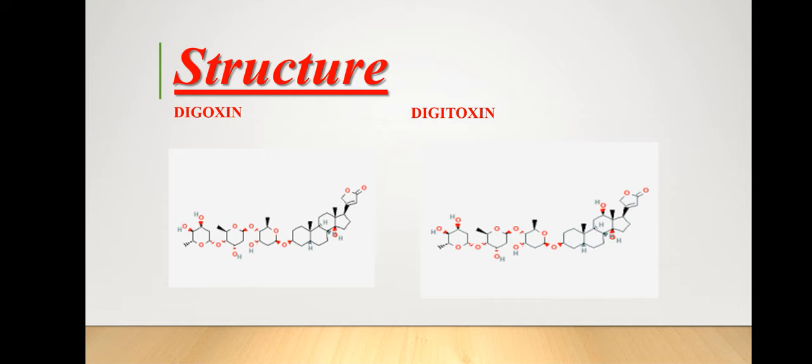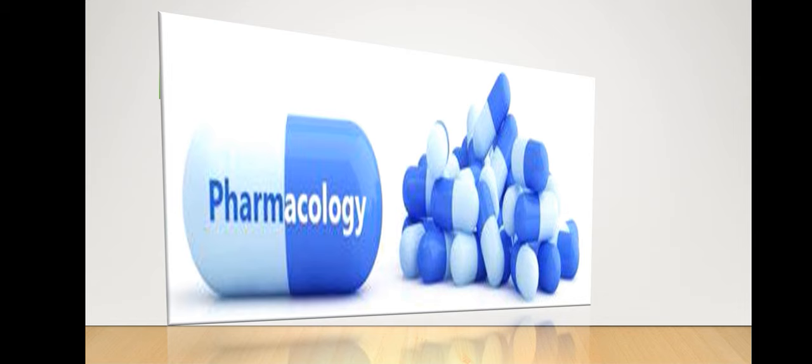You can see the structures of digoxin and digitoxin. In both structures, the main difference occurs at carbon number 3 in digitoxin, where a hydroxyl group is replaced. This is the main structural difference between digoxin and digitoxin.